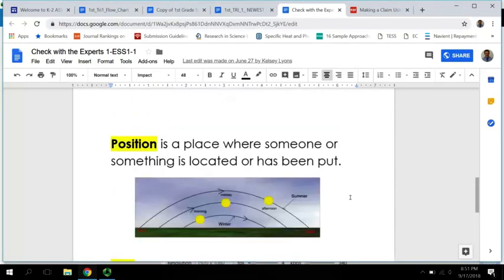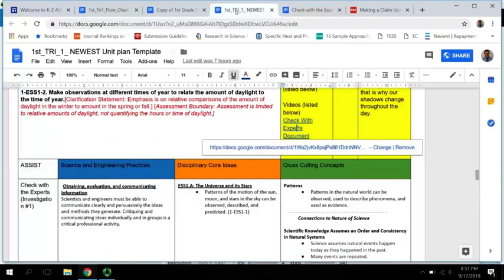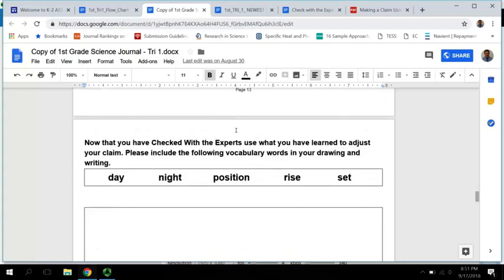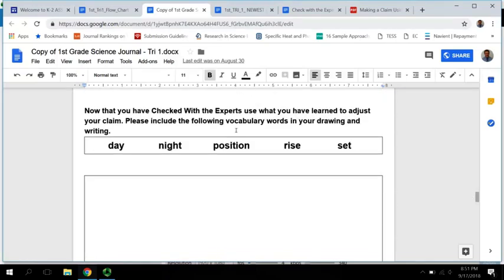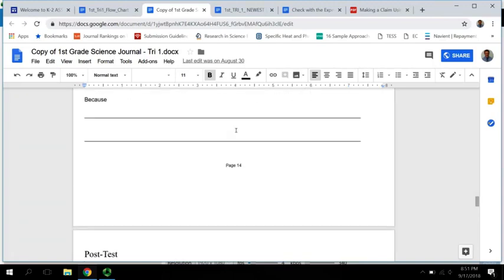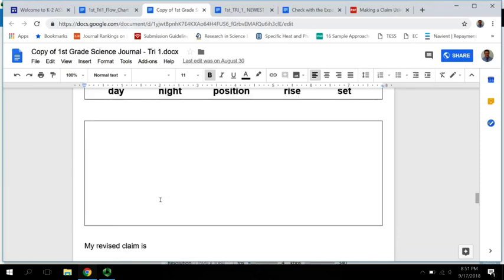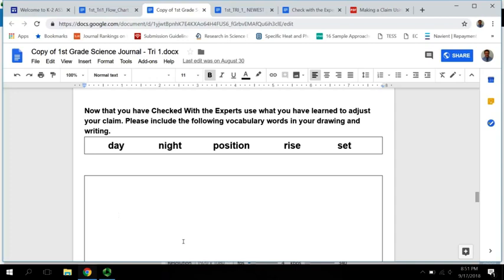So the reason that we have those highlighted is because after the students read the information in the check with the experts, they're going to go to page 14 of their thinking log. And they're going to update their claims. So you can see here it says my revised claim is blank because blank. And we also have this area here where they can draw pictures and they can put these vocabulary words next to their picture.